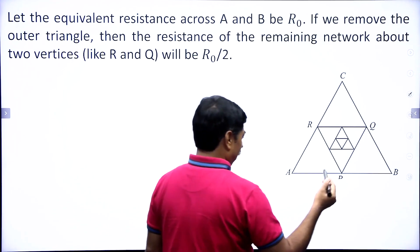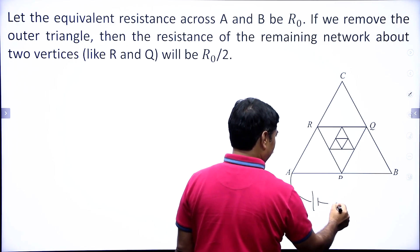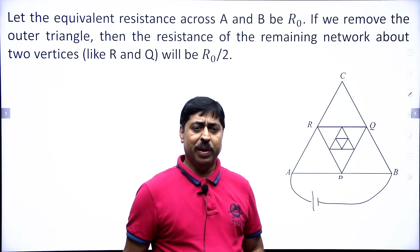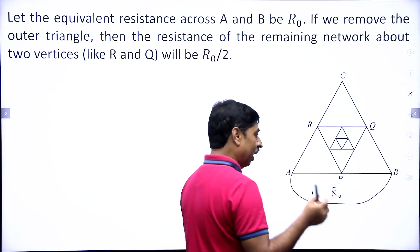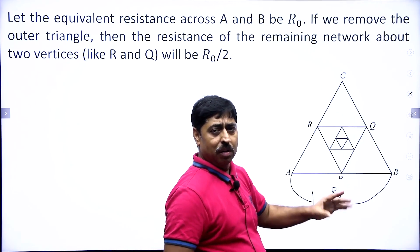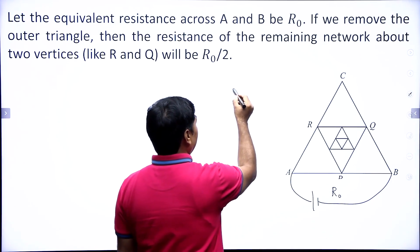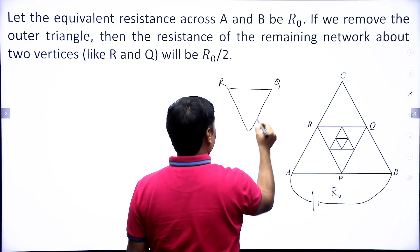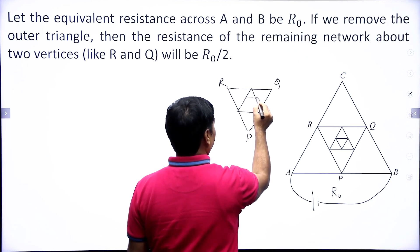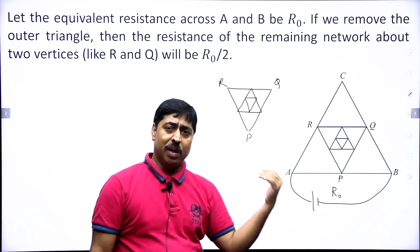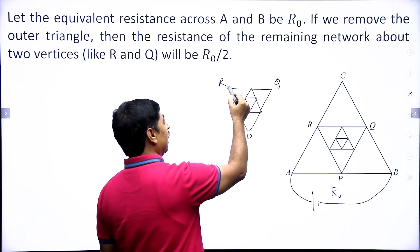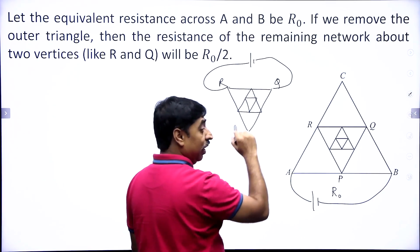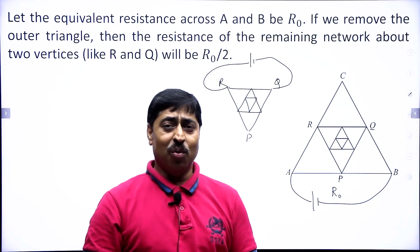If you assume there is a battery connected here and the resistance faced by the battery is R₀ — that is, the equivalent resistance across A and B is R₀ — then if you remove the outer triangle completely, and think that the circuit is now the inner triangles only, the equivalent resistance between those two vertices R and Q will be equal to R₀/2. This is true for any circuit.